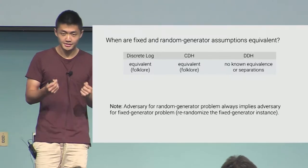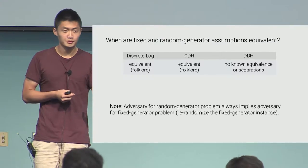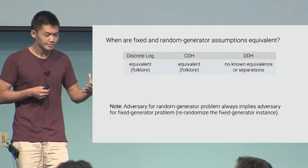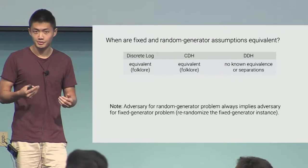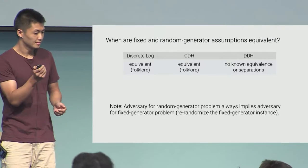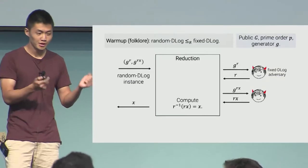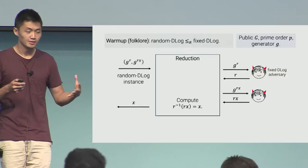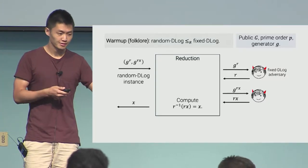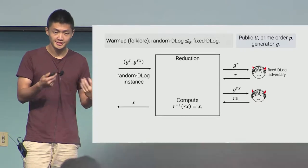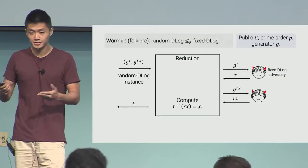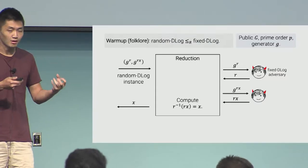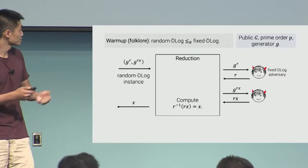If you have a fixed generator instance, you can raise every single one of your group elements to a random power and feed that to your random generator adversary. So the random generator problem is always at least as hard as the fixed generator problem. As a warm-up, here's the equivalence between random generator discrete log and fixed generator discrete log. Given the random generator discrete log instance, g^r is my random generator and I'm given g^(rx). My task is to find x. If I have a fixed discrete log adversary, I run it on g^r and then on g^(rx). Once I have r and rx, it's trivial to find x.